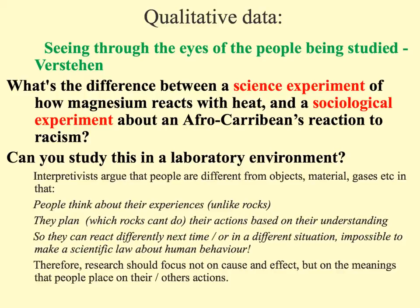Every time you add heat to magnesium it glows a brilliant bright white colour. However, if you have a black person being subject to a racist incident, they may react differently next time, or one person's reaction might be completely different to the next person's. You can't create a law saying every time an Afro-Caribbean hears racism they will react in exactly the same way. So interpretivists that favour qualitative data would argue that sociologists looking for patterns and correlations are wasting their time, because there is no cause and effect relationship for human behaviour — instead we need to look at the meanings that people place on their actions.